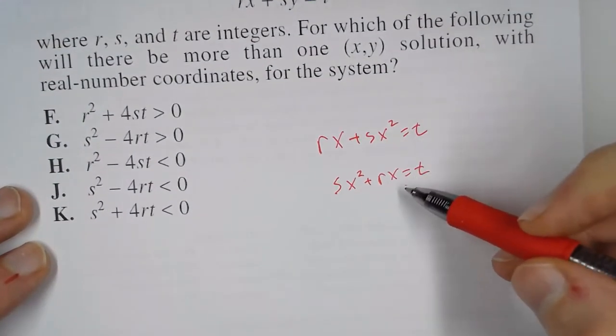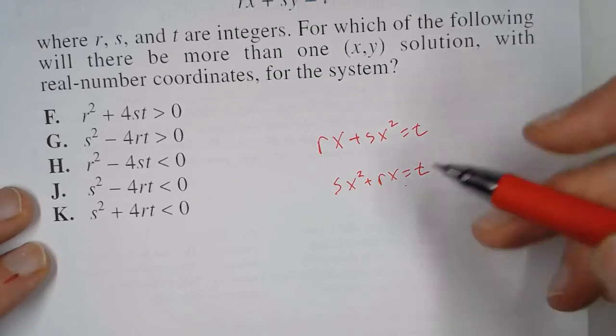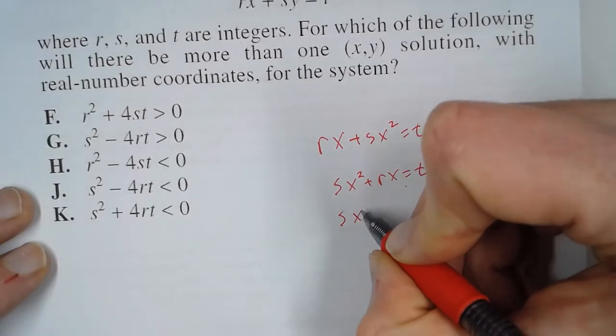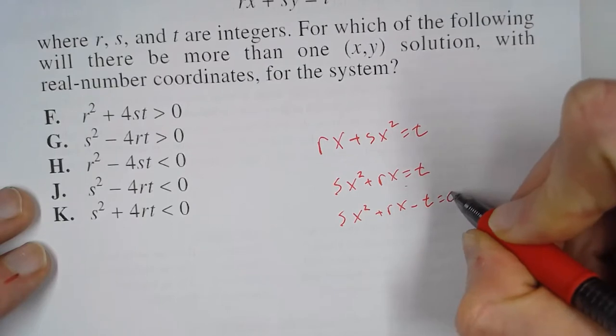And then what we'll do is we always want quadratics equal to zero. So what we're going to do is bring the t over. So s times x squared plus rx minus t equals zero.